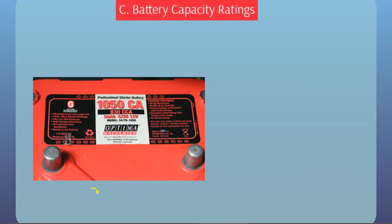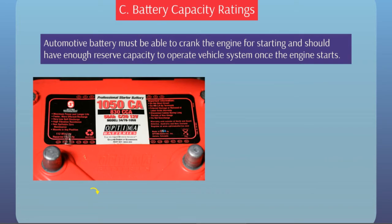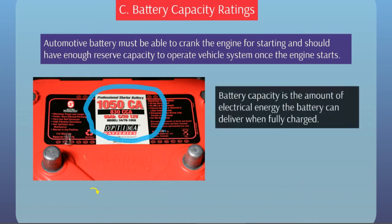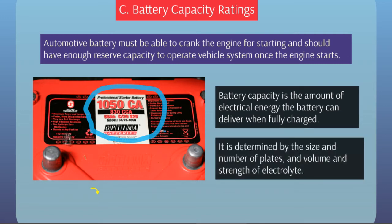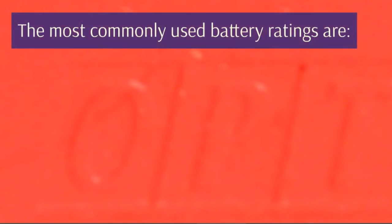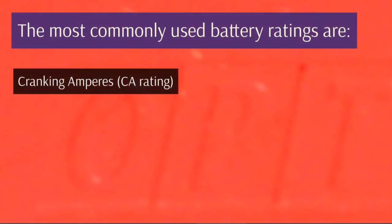Battery Capacity Ratings. An automotive battery must be able to crank the engine for starting and should have enough reserve capacity to operate vehicle systems once the engine starts. Battery capacity is the amount of electrical energy the battery can deliver when fully charged. It is determined by the size and number of plates, and the volume and strength of the electrolyte.